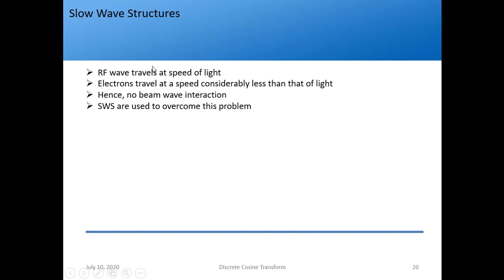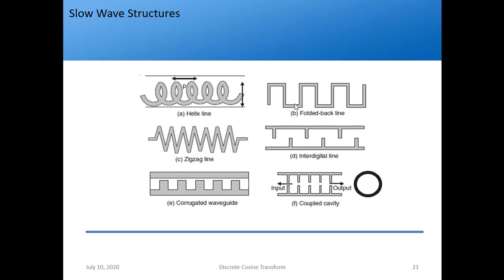Next we study slow wave structures. The RF wave travels at the speed of light, as proved from Maxwell's equations. However, electrons travel at a speed considerably less than that of light, so there is no beam-wave interaction. Slow wave structures are used to reduce the velocity of the RF wave so it becomes approximately equal to the electron velocity, enabling efficient beam-wave interaction and achieving amplification or oscillations. Various types of slow wave structures exist, including the helical line type.